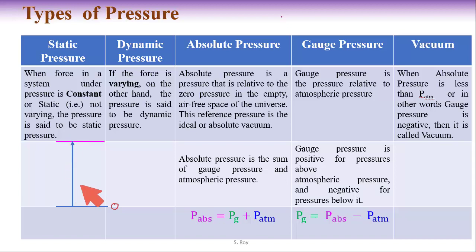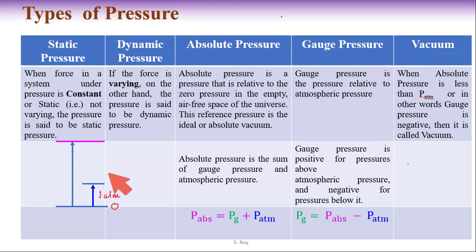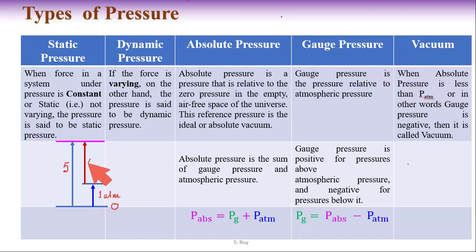Now if we change the reference — say we are measuring the same pressure with respect to atmospheric pressure — this vertical line indicates one atmospheric pressure. If that pressure is measured with respect to atmospheric pressure, it will be shown as the red colored vertical line. For example, this pressure is 5 units when measured with respect to zero reference, and the same pressure reads 4 units when measured with respect to atmospheric pressure. When the indication is 5 units, that is absolute pressure; when it is 4 units, that measurement is gauge pressure.